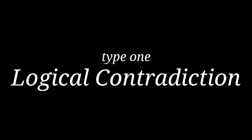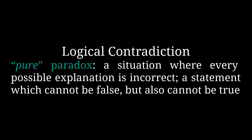The first and most important type of paradox is a logical contradiction. These are situations where every possible explanation can be shown to be incorrect. This is the primary definition of paradox, and the other four categories of paradox are called paradoxes due to their resemblance to these logical contradictions.